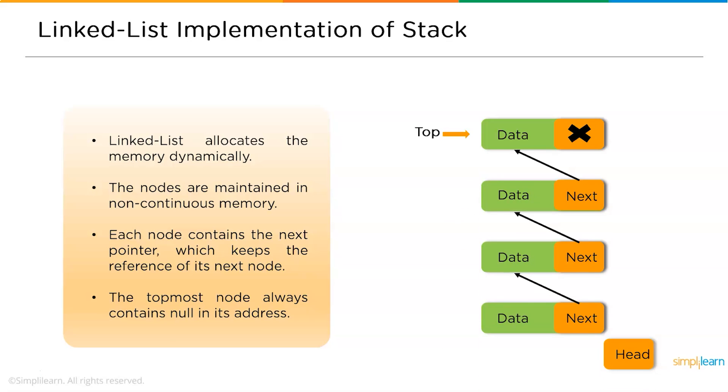This is how a linked list looks like. This is the top, which is the beginning position of the linked list, and this is the address of the first location and this is the next node.